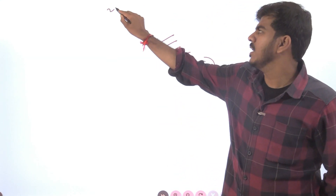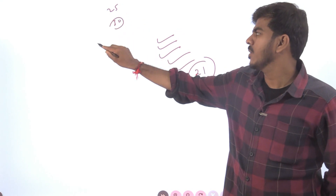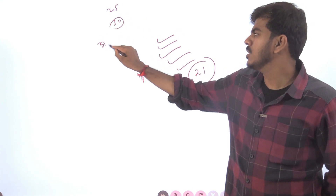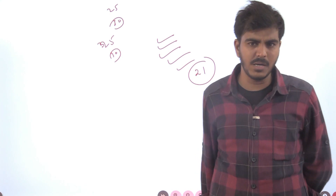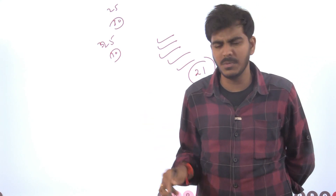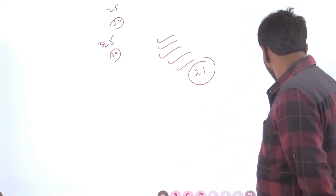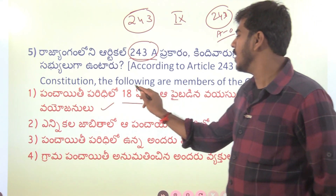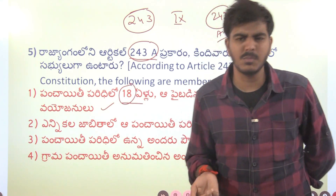For assemblies, the age limit is 25 years. For the panchayati bodies it is 21, and for Lok Sabha it is 25, and for Rajya Sabha it is 30. As a citizen, you need to be 18 years to vote — these are the age limits.